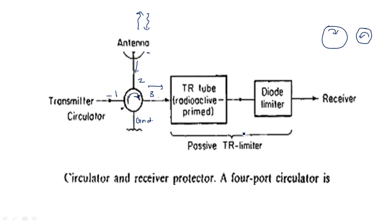A receiver protector is used because if the circulator does not work properly, the transmitted high power signal could directly reach the receiver and damage it. For such failure cases, a passive TR limiter (transmit-receive tube) is used. When high power enters the TR limiter, it acts as a short circuit and stops the signal from reaching the receiver. This TR limiter is not normally required, but during circulator failure it is an essential protective component.